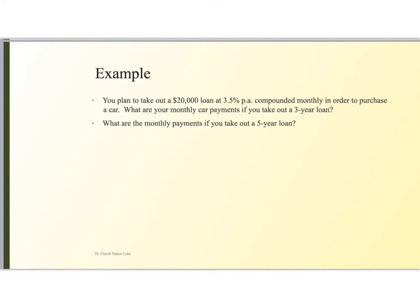So let's assume that we plan to take out a $20,000 loan at 3.5% per annum. We're compounding this monthly so that we can purchase a car, and we want to know what the monthly car payments would be if we took out a 3-year loan or a 5-year loan. So let's just work this.